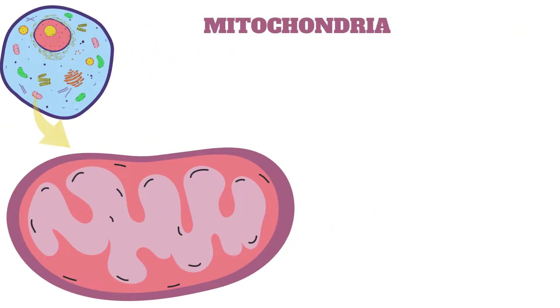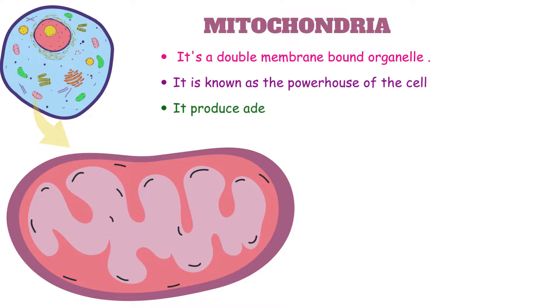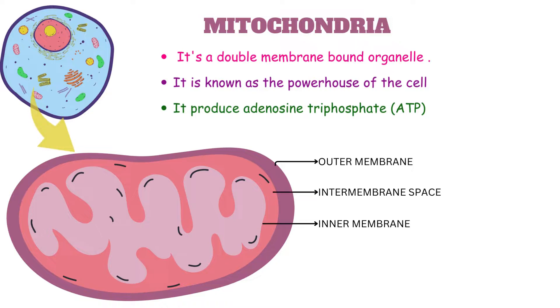Mitochondria is a double membrane-bound organelle. It is also called as the powerhouse of the cell. It produces ATP molecules. If we look at the structure of mitochondria, it has outer membrane, inner membrane, intermembrane space, and the matrix.